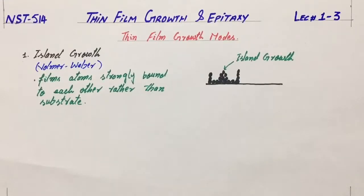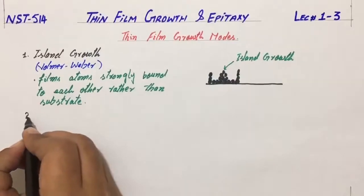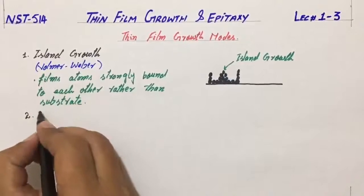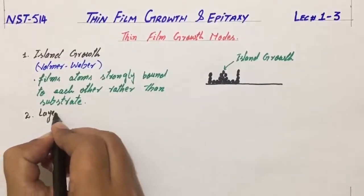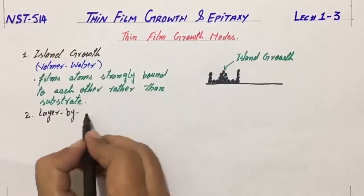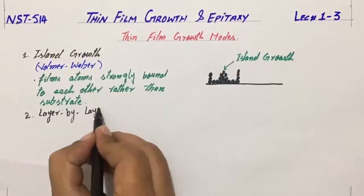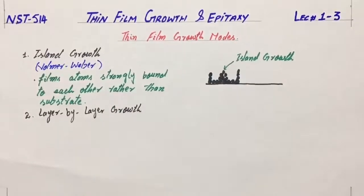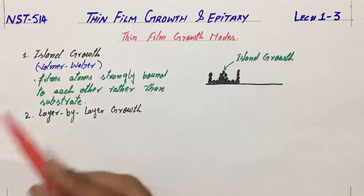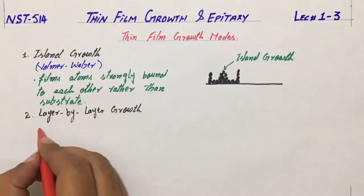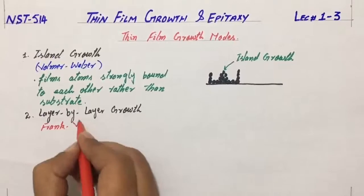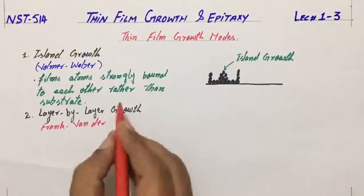The second growth mode is layer-by-layer growth. This layer-by-layer growth is also called the Frank-van der Merwe mode.